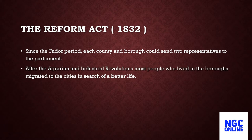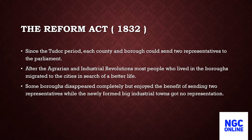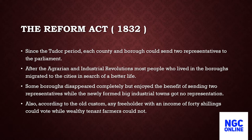After the Agrarian and Industrial Revolutions, most people who lived in the boroughs migrated to the cities in search of a better life. Some boroughs disappeared completely but still enjoyed the benefit of sending two representatives, while the newly formed industrial towns got no representation. Also, according to the old custom, any freeholder with an income of 40 shillings could vote, while wealthy tenant farmers could not.